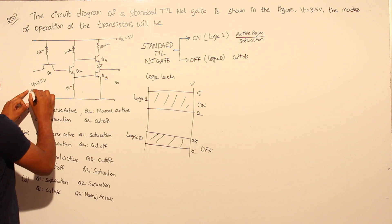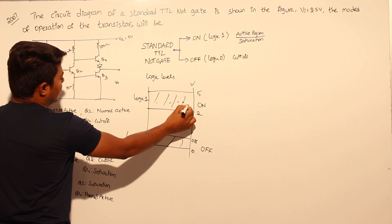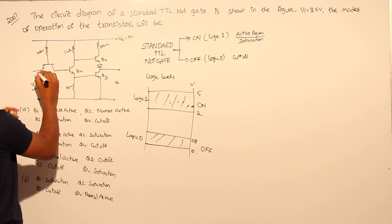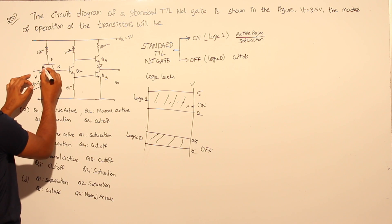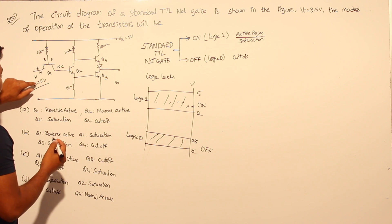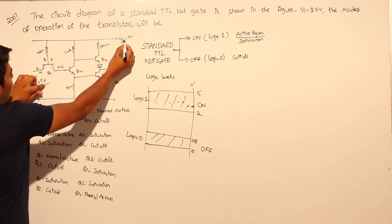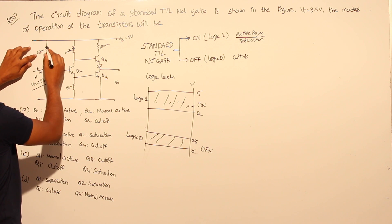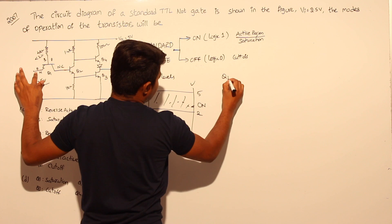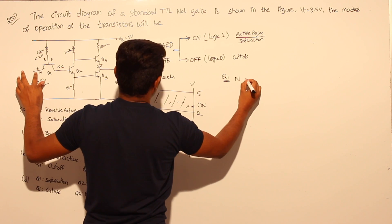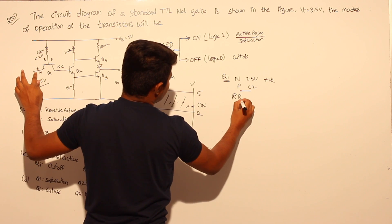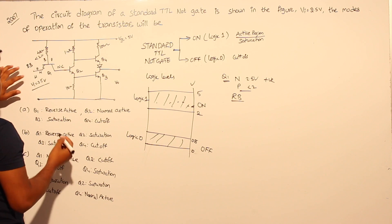Since VA equals 2.5 volts, which falls in the logic high range, a logic high is being applied to the NPN transistor. Looking at Q1: the input is 2.5 volts on the N-side, while the P-side has less than 2 volts due to the voltage drop across the 4 kilo-ohm resistor from VCC of 5 volts. Since the N-side is more positive than the P-side, the junction is in reverse bias.